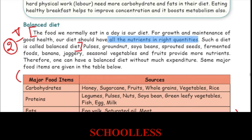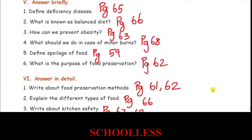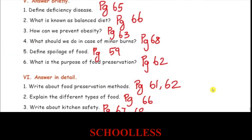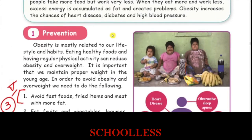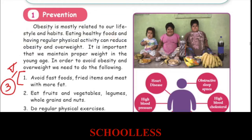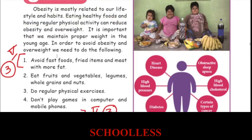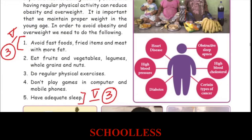If our diet contains all the nutrients in the right quantities, that is a balanced diet. Third question: How can we prevent obesity? Page number 63 — in the prevention of obesity, you have several points.